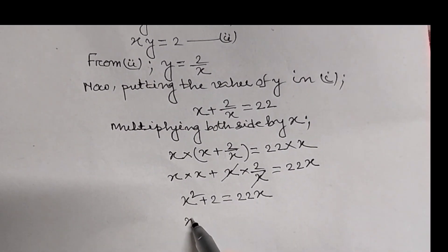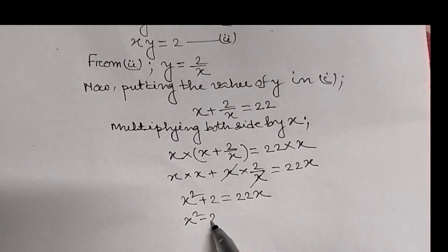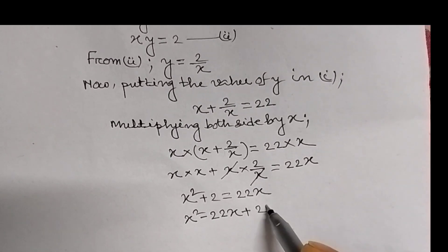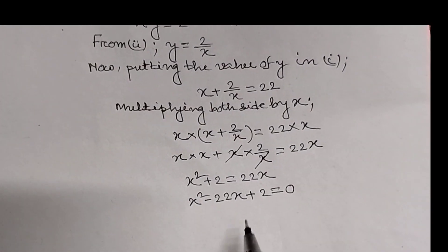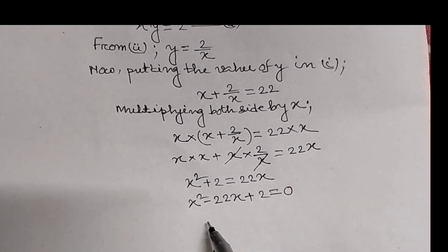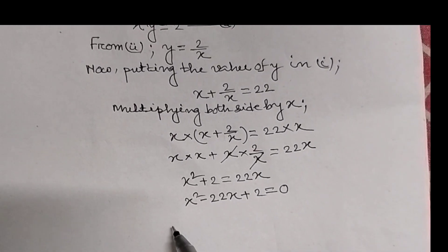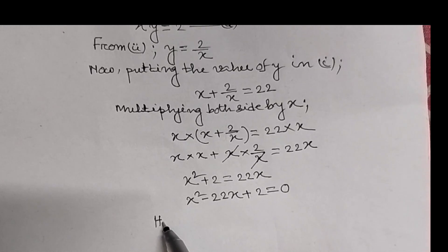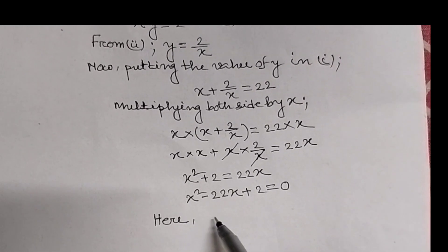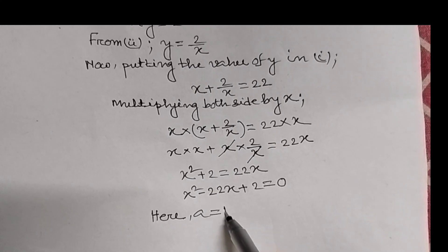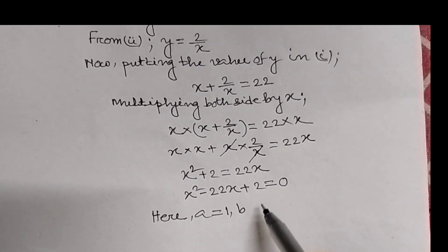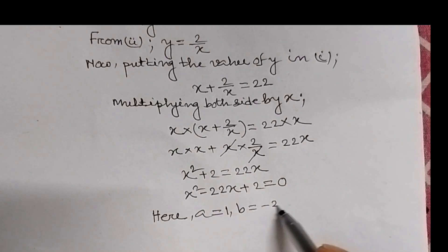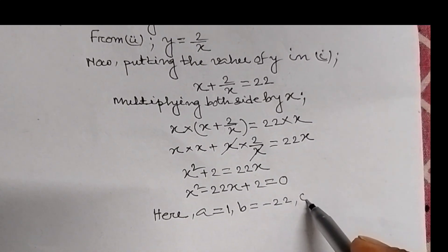Therefore, x squared minus 22x plus 2 equal to 0. This equation is of the form Ax squared plus Bx plus C equal to 0. Therefore, here we can say A equal to 1, B equal to minus 22, and C equal to 2.